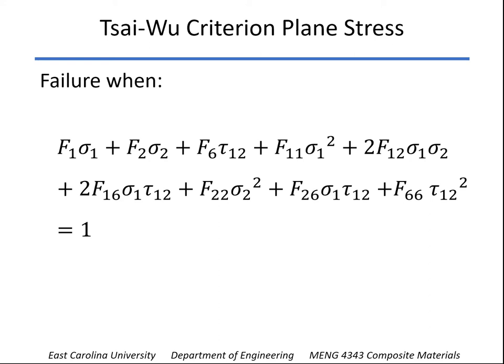If you expand this to three dimensions, you have a lot more terms, but these are the ones for plane stress only. We have sigma-1, sigma-2, and tau-1-2 as the only components of stress. This second-order polynomial will predict failure when the sum of all these terms is equal to 1.